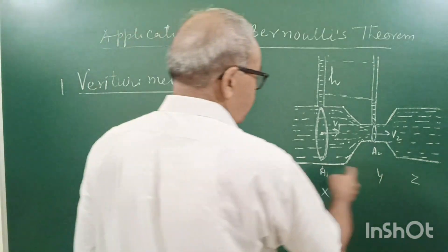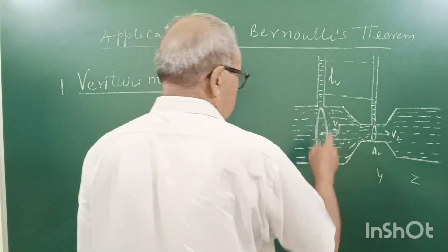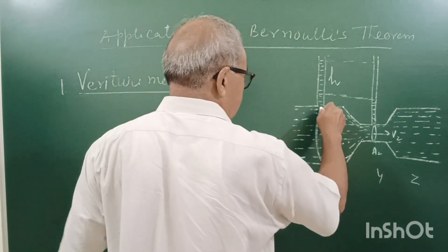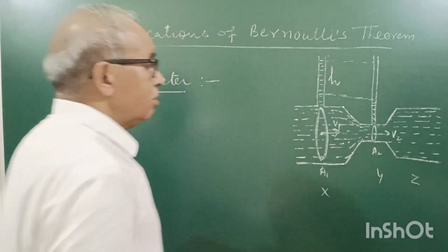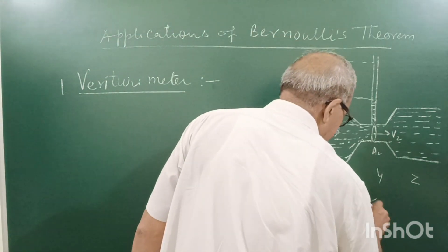It consists of a tube x, y, z. Here, at the x-end, it has area A1, and here it is narrow with area A2, smaller than A1. A2 is less than A1.